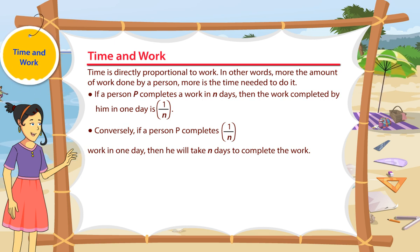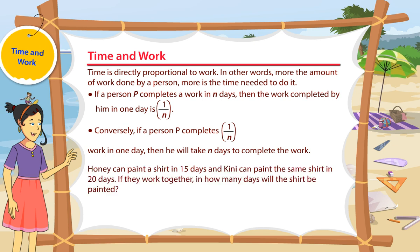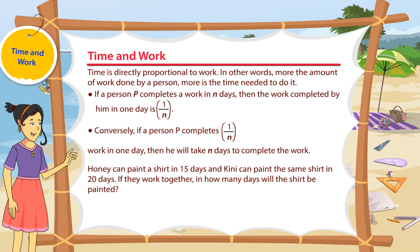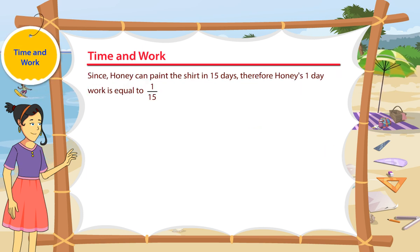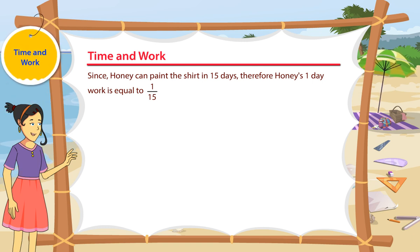Let's consider an example. Honey can paint a shirt in 15 days and Kinney can paint the same shirt in 20 days. If they work together, in how many days will the shirt be painted? Since Honey can paint the shirt in 15 days, Honey's one day work is equal to 1 by 15.